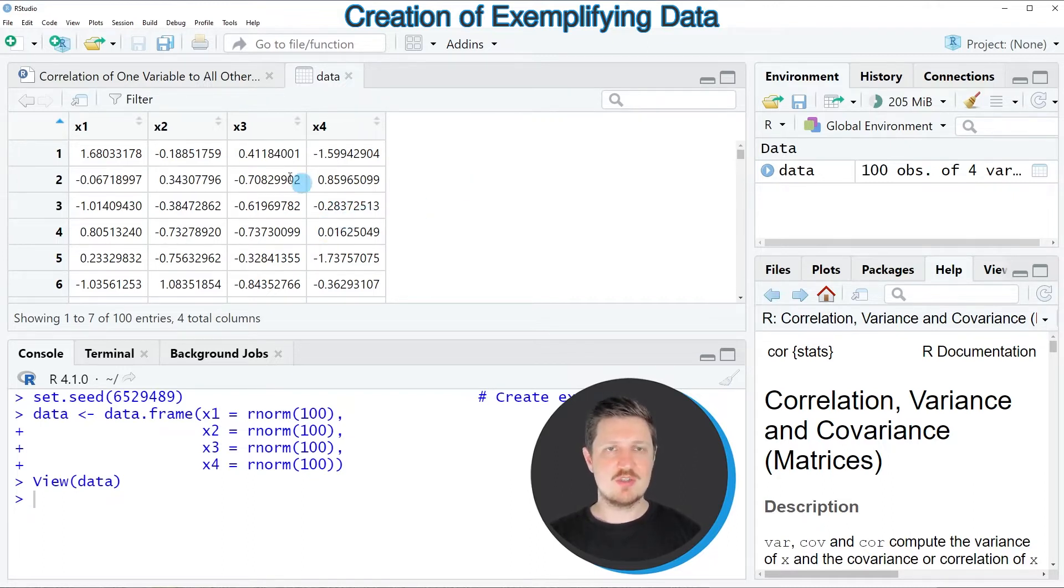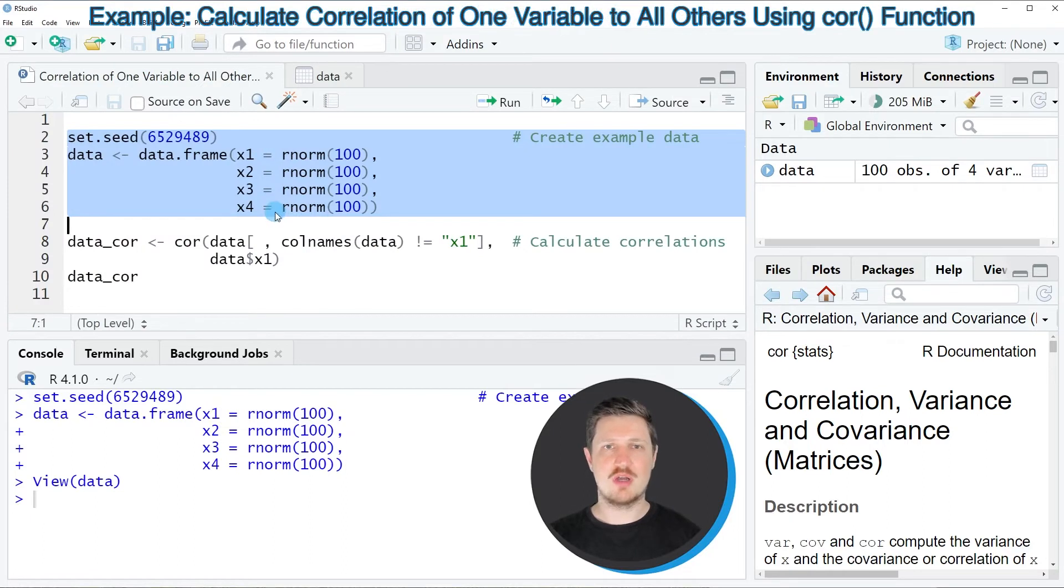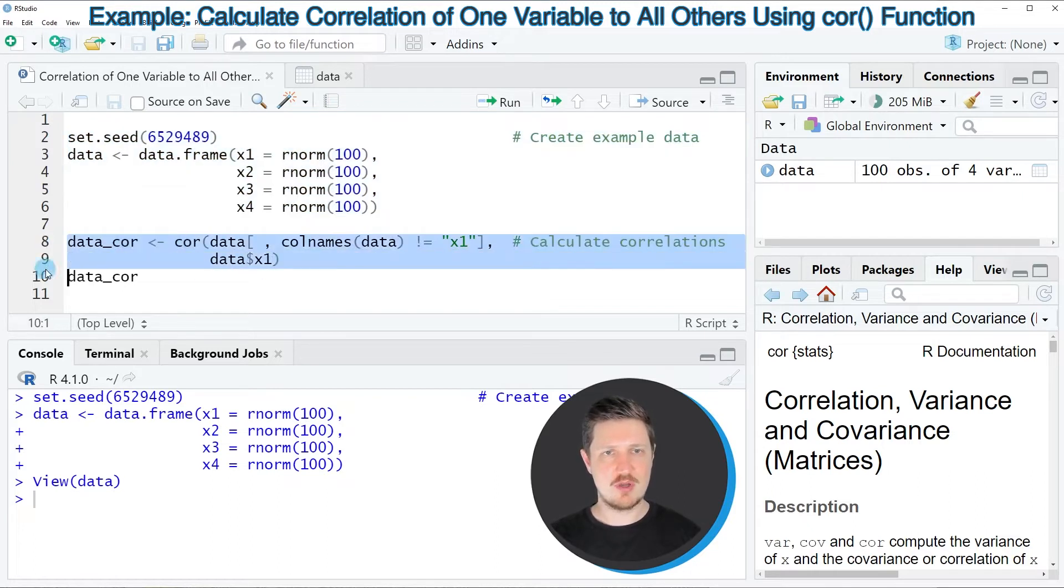Now let's assume that we want to get the correlation of the column x1 to all the other columns. Then we can apply the cor() function as you can see in lines 8 and 9 of the code, and within this function we need to specify a subset of our data frame.